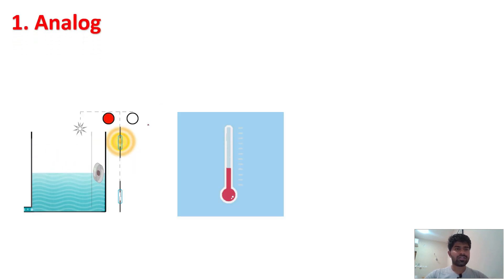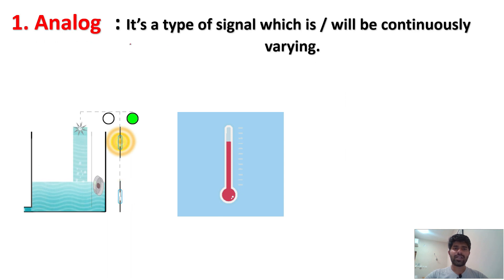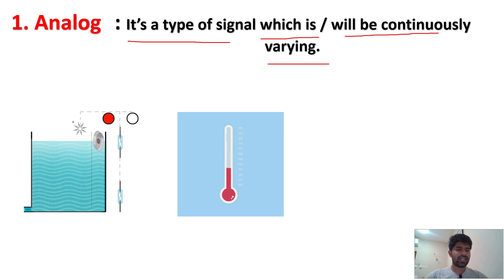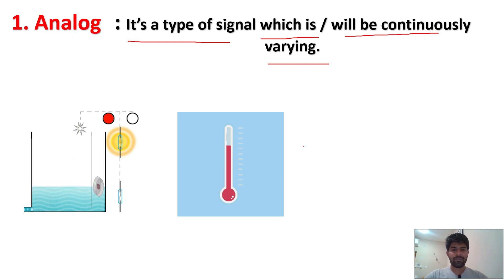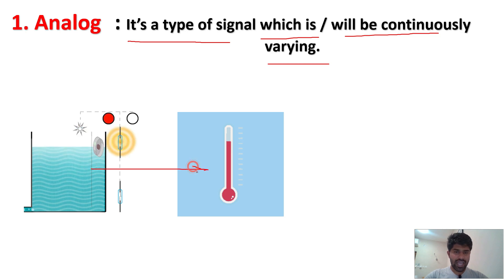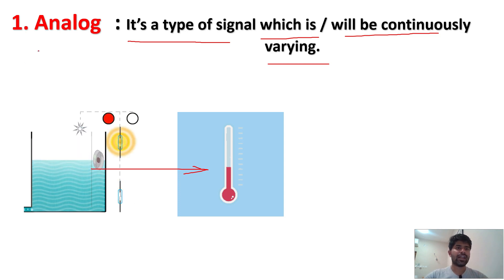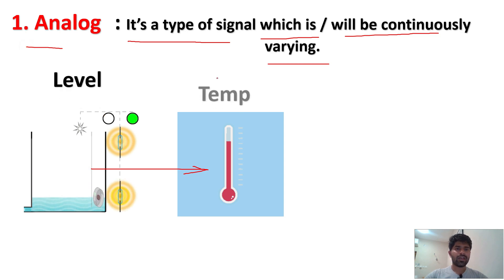So what is meant by analog? It is a type of signal which will be continuously varying. For example, if I am measuring some level, it is continuously varying. If I am measuring the temperature of a tank, it will be continuously varying based on the weather conditions. So a signal which will be continuously varying is called analog. Examples are level and temperature.